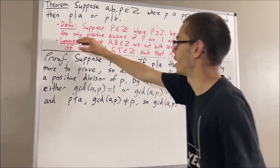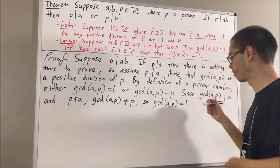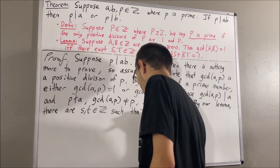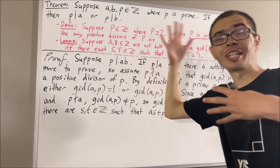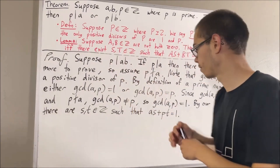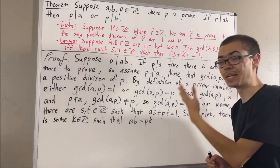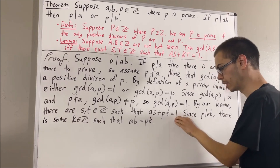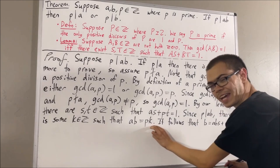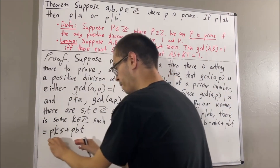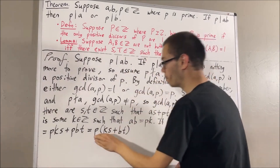Now that we know gcd(a, p) equals 1, we can apply our lemma. The lemma tells us there are integers s and t such that as plus pt is equal to 1. Now let's use the fact that p divides ab. This means there is some integer k such that ab is equal to p times k. Let's take the equation as plus pt equals 1 and multiply both sides by b. We get b equals abs plus pbt. Then we substitute ab for pk, and factor out a p. So we see that b is equal to p times an integer, and therefore p divides b.